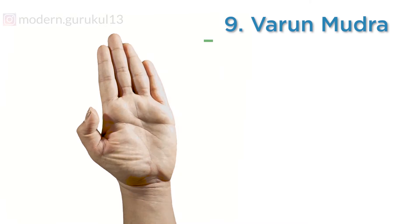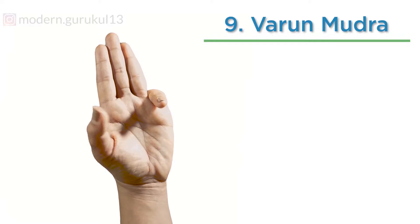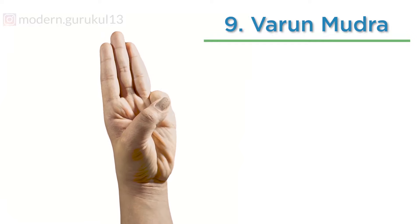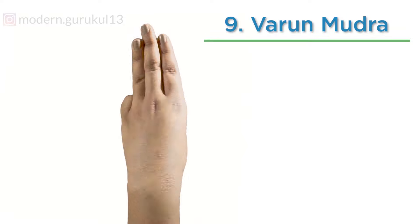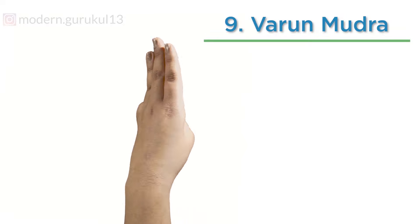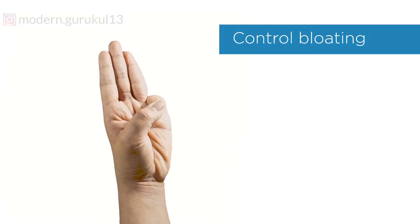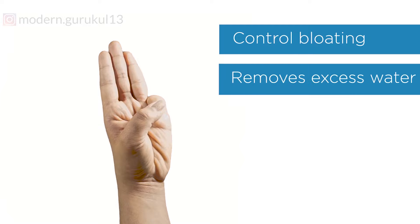Jal Shaamak Mudra: It is similar to buddhi mudra. The only difference is that we bend our little finger, then the tip of the thumb is placed on the top of the little finger. It helps control bloating and removes excess water from the body.